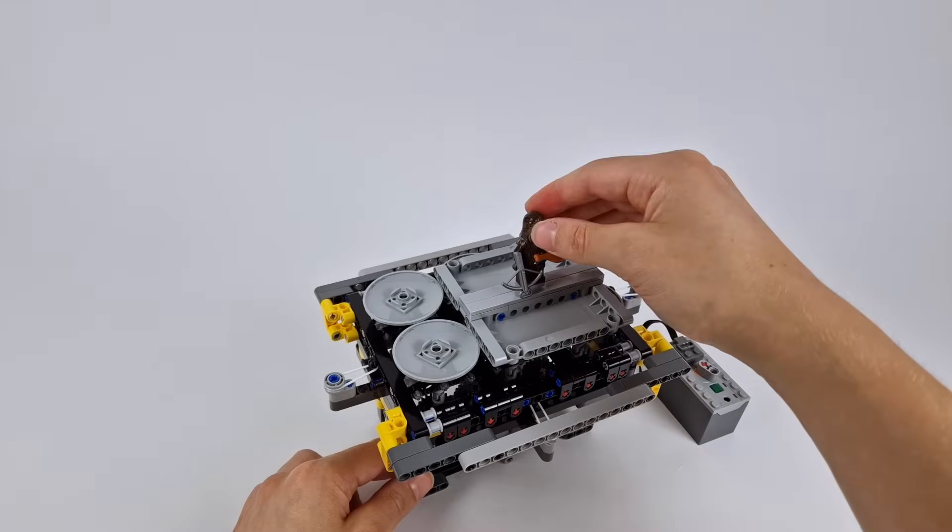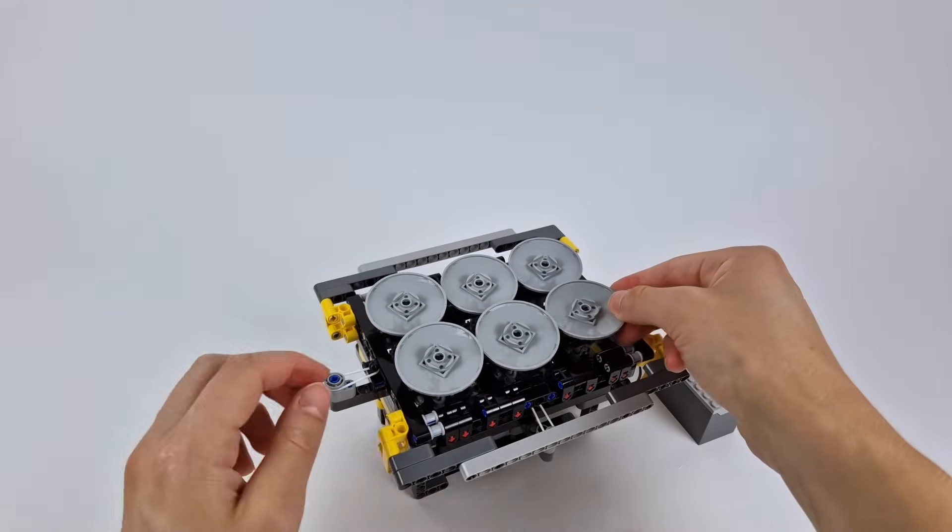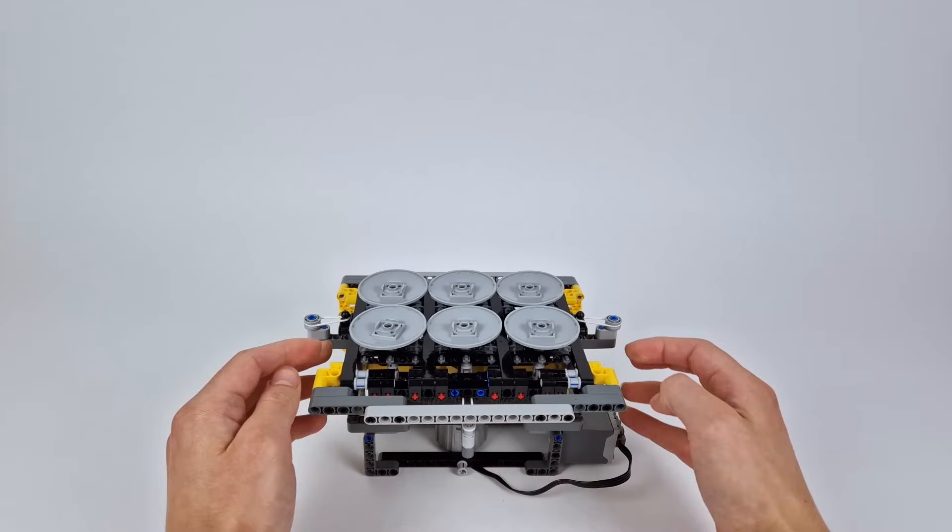But then I had an idea. What if instead of using these tilting discs as a treadmill, I used them as wheels for it to move itself.